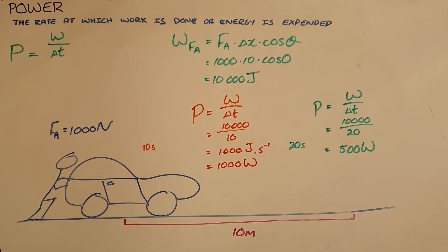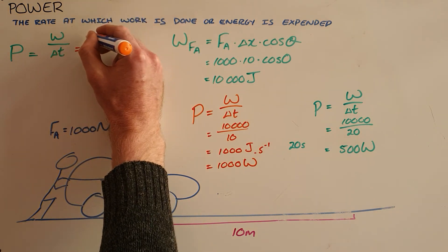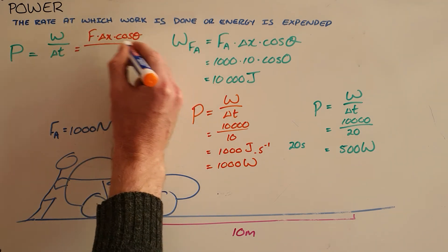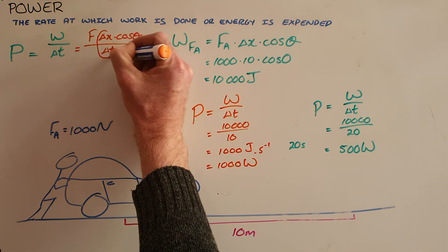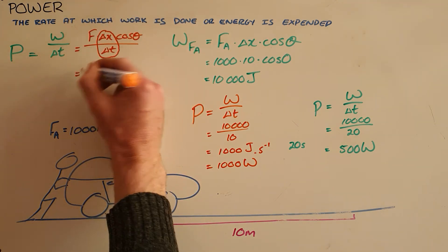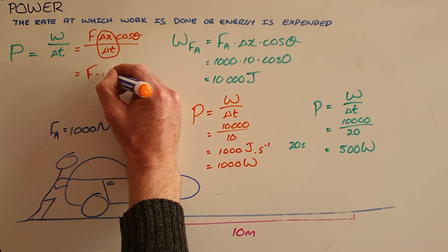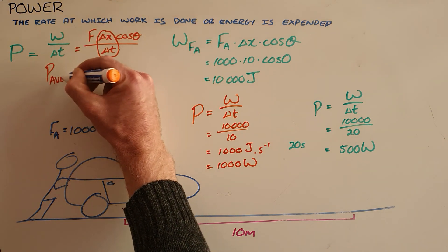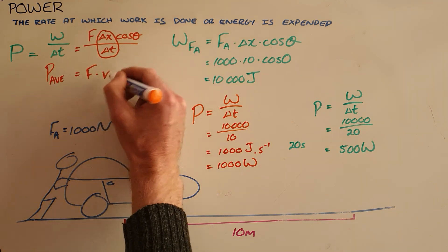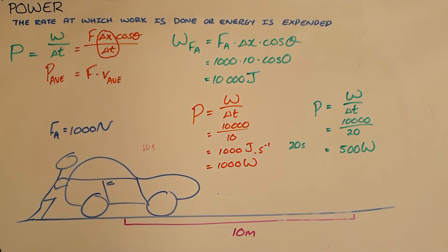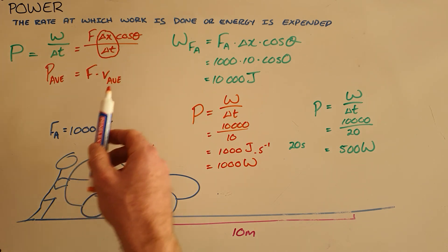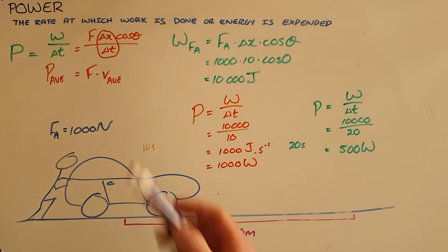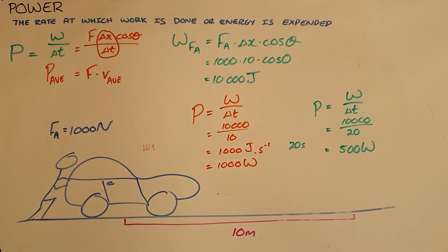It is also possible to adapt this formula. Since work is the product of force, displacement, and the cosine of the angle between the two, we can rearrange to see that displacement over time is velocity. Therefore, a simplified formula for average power is force times average velocity, which is useful for calculating the power output of any object moving at a constant velocity.